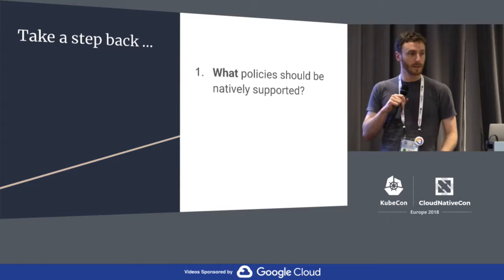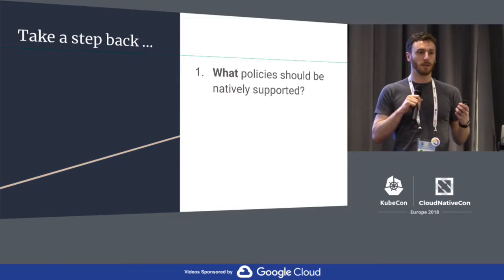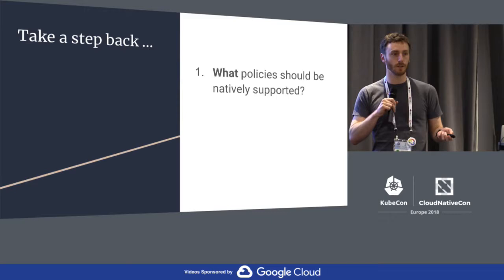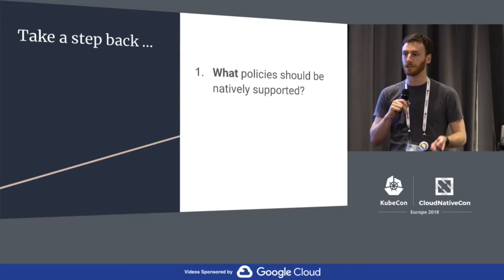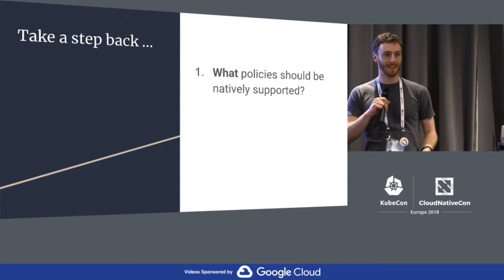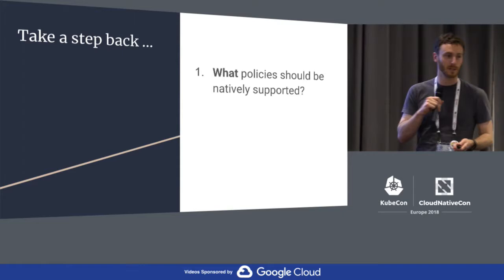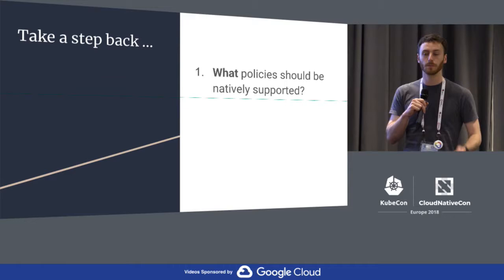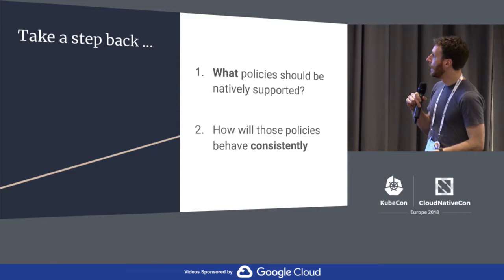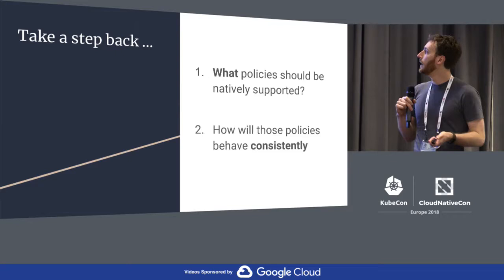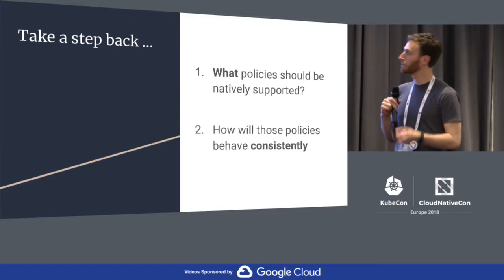We're going to talk about OPA a little later in this deep dive. One of the questions we have is which of these policies should we actually be building into Kubernetes, and which should we be delegating to other tools that specialize in policy management? I don't want us to end up re-implementing OPA in YAML in Kubernetes CRDs to support all possible combinations of policies. This is the most important question in the working group, SigAuth, and the Kubernetes community.